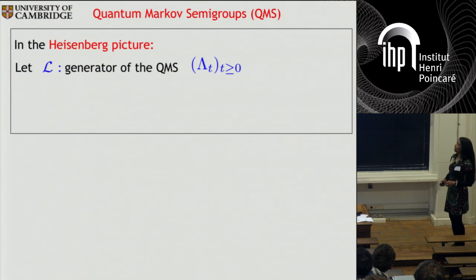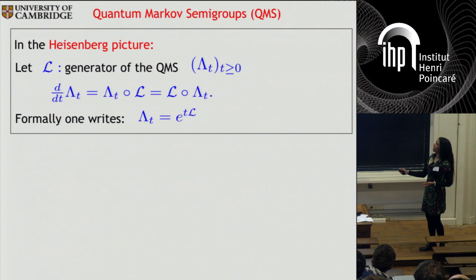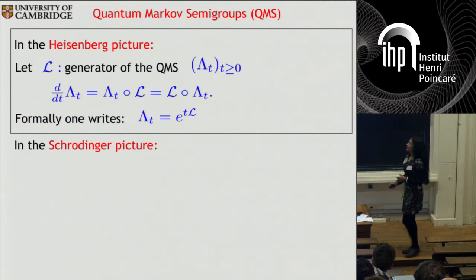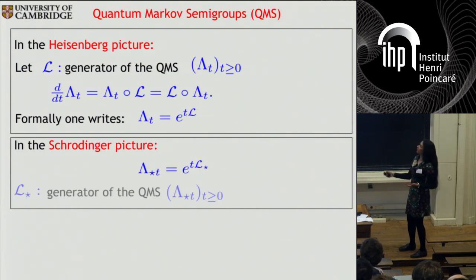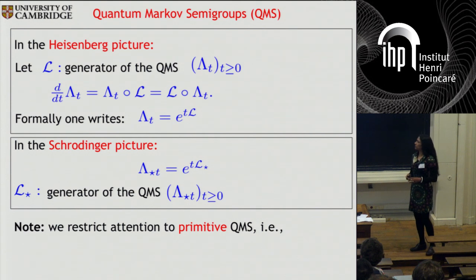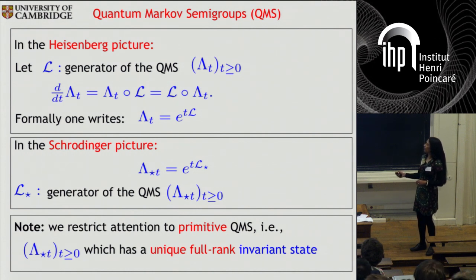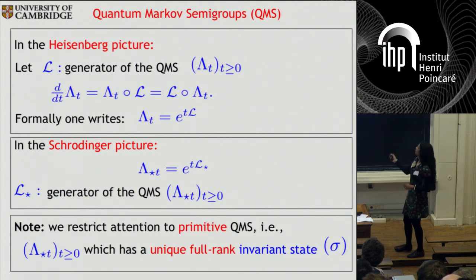In the Heisenberg picture, one can denote by L the generator of the quantum Markov semigroup. It satisfies the relation lambda t equals e to the tL. In the Schrödinger picture, the generator is denoted L star. An important thing to stress is that we are going to restrict attention to primitive quantum Markov semigroups — ones which have a unique, faithful or full-rank invariant state. The invariant state throughout this talk will be denoted by sigma.